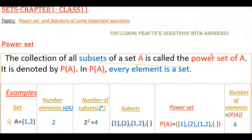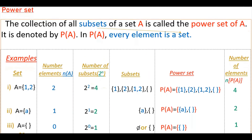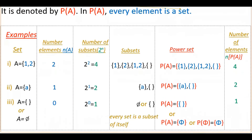Hello everyone. Today I am going to talk about power sets and solutions of some important questions. The collection of all subsets of a set A is called the power set of A. It is denoted by P(A). In the power set, every element is a set. If you see the examples, you will understand easily.